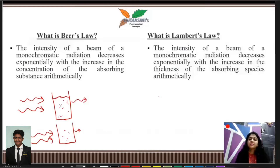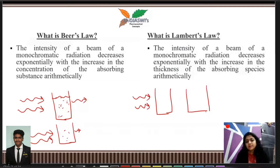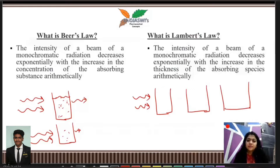What is Lambert's law? The intensity of a beam of monochromatic radiation decreases exponentially with increase in the thickness of the absorbing species arithmetically. According to Lambert's law, absorbance will be directly proportional to the path length or the thickness of the cuvette.